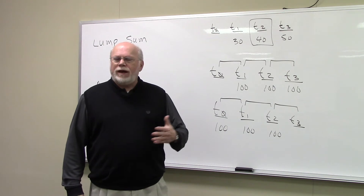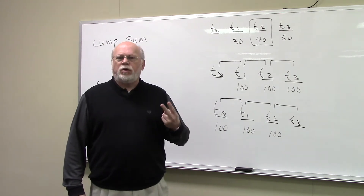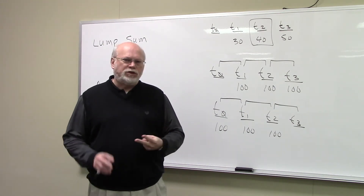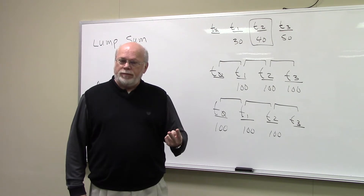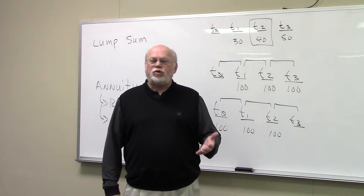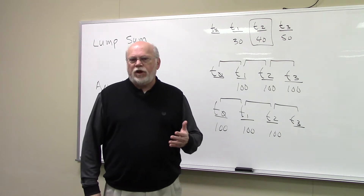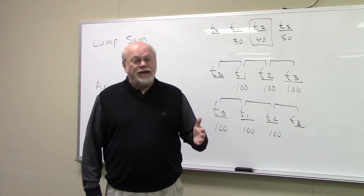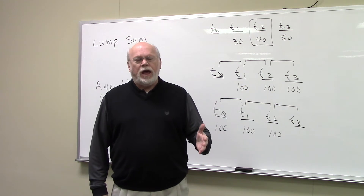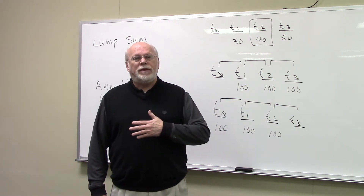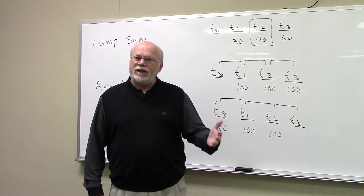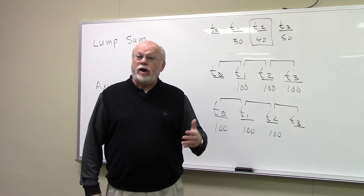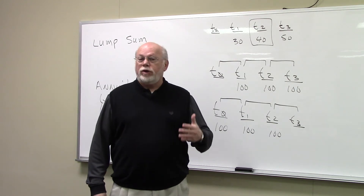When you deal with time value of money, there are only two kinds of cash flows that we ever deal with really. One is called a lump sum cash flow and the other is called an annuity. A lump sum cash flow is described as a cash flow that has no equal cash flow in any adjacent time period. An annuity is described as an even stream of cash flows, and there are two kinds of annuities: ordinary regular annuities and what are called annuity dues.